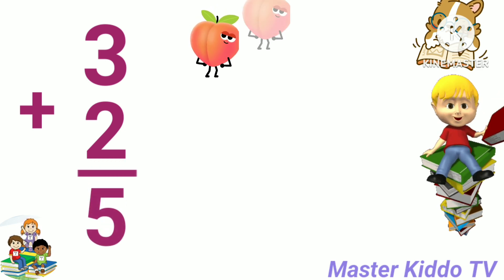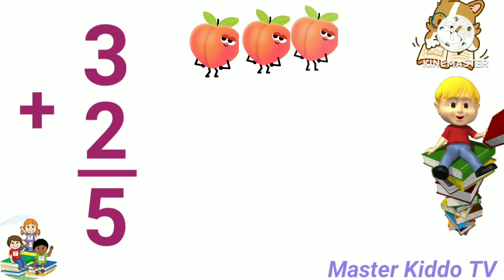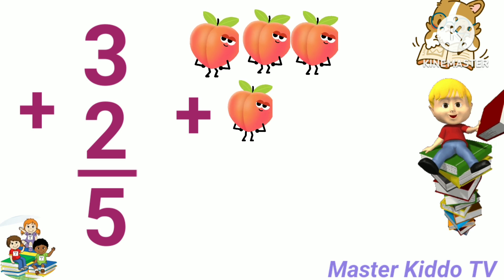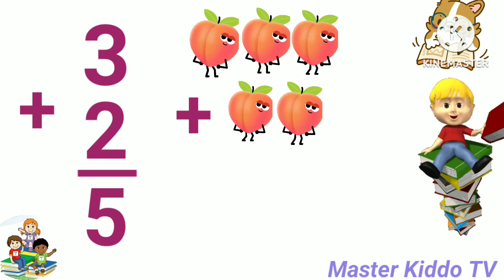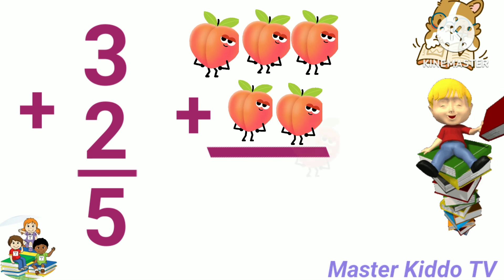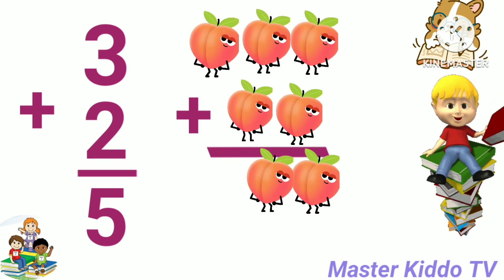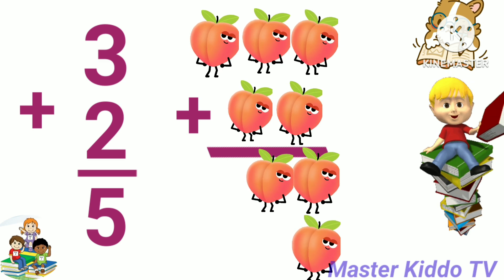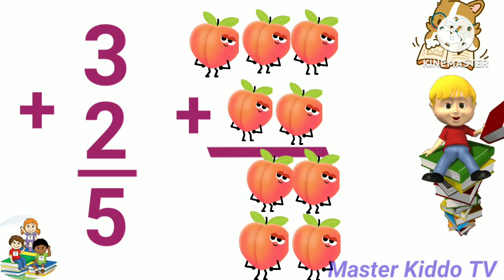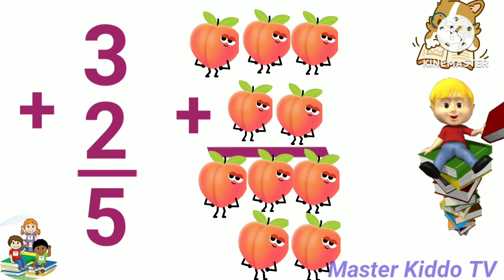5! 3 peach plus 2 peach, 3 peach plus 2 peach is equal 5 peach. 3 peach plus 2 peach, the answer is 5 peach.